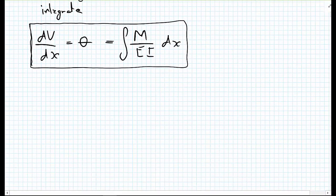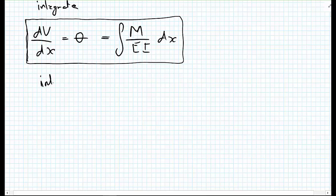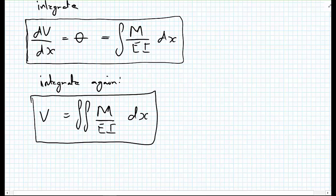And we can go again, and integrate once more. And this will get us to, so we integrate dV/dx, gets us V, is equal to the double integral of M/EI dx. And you can put dx dx if you like. So by double integrating, we can get at our deflection at a point.